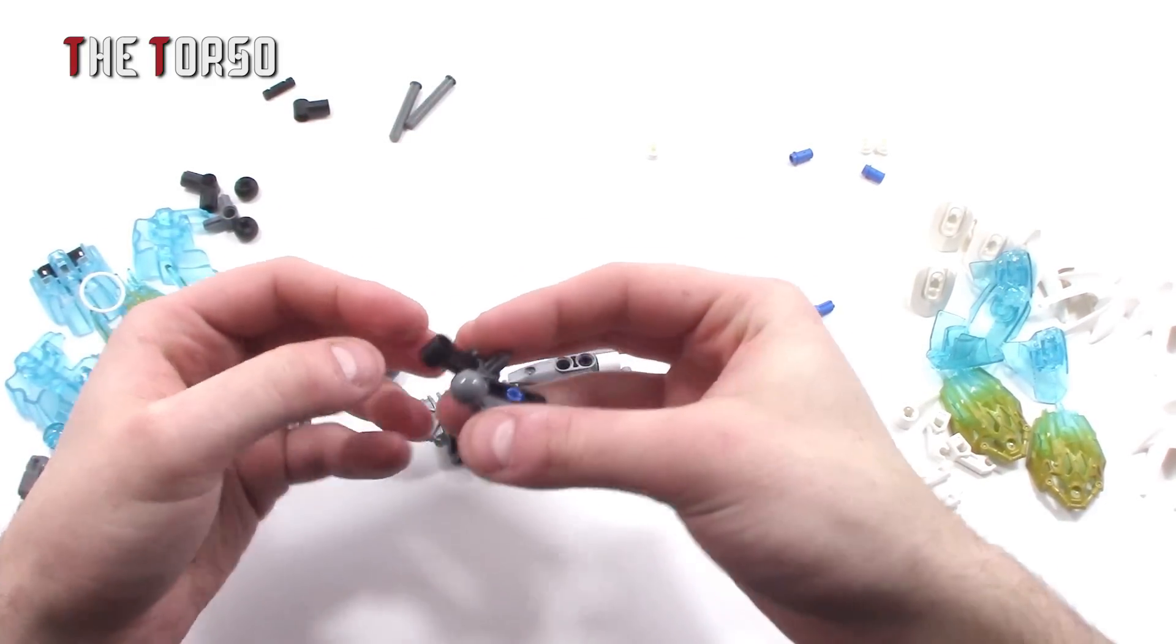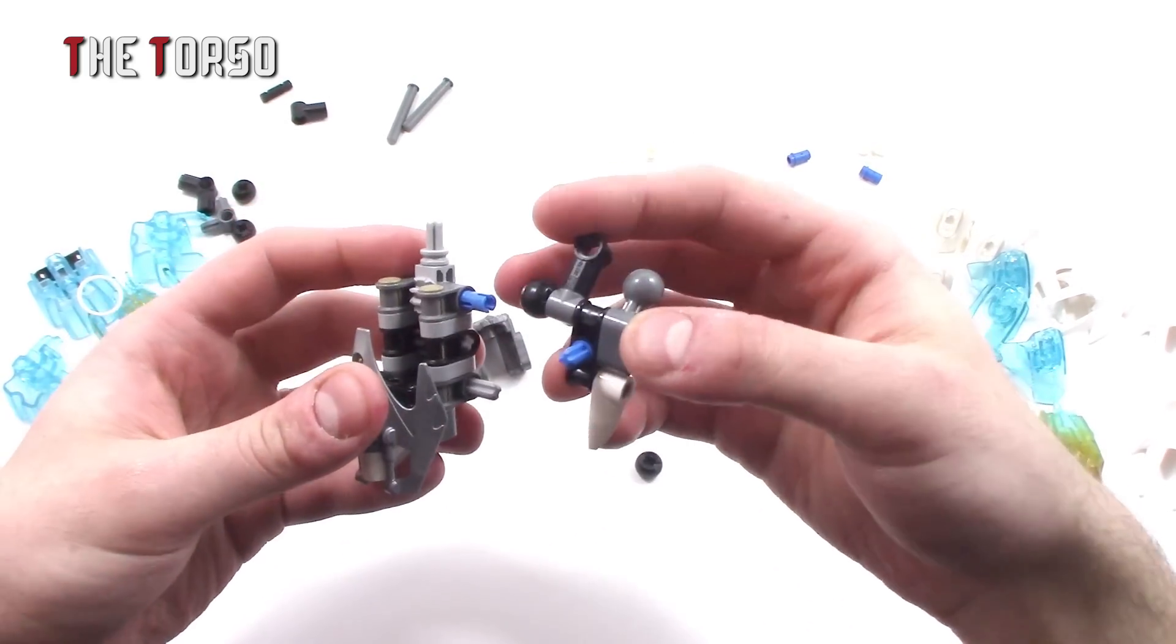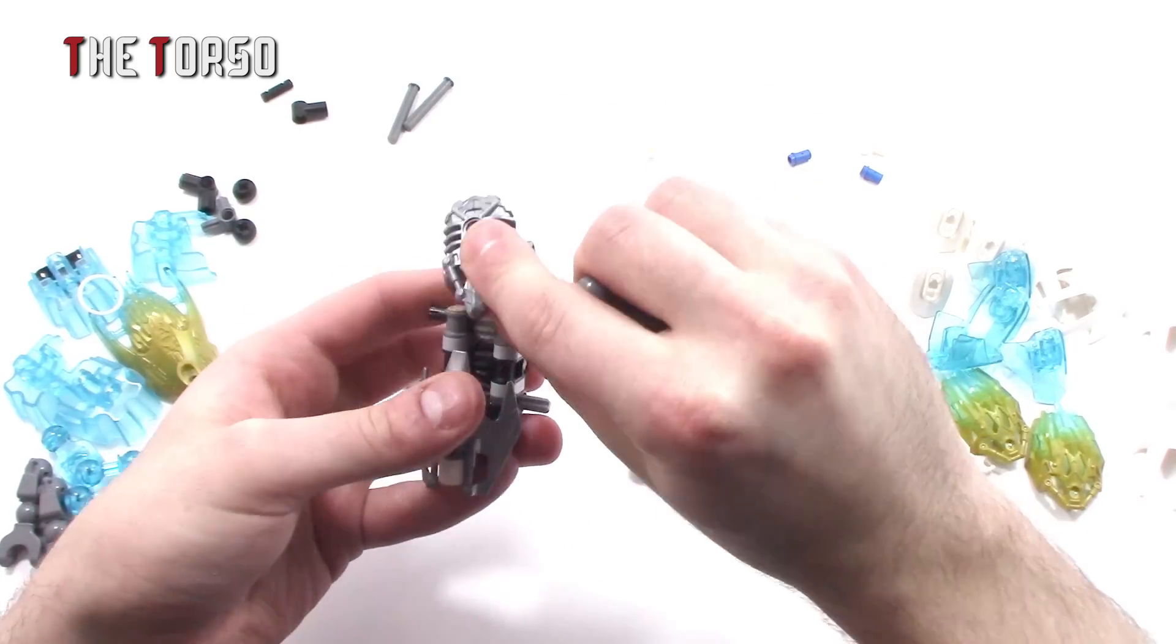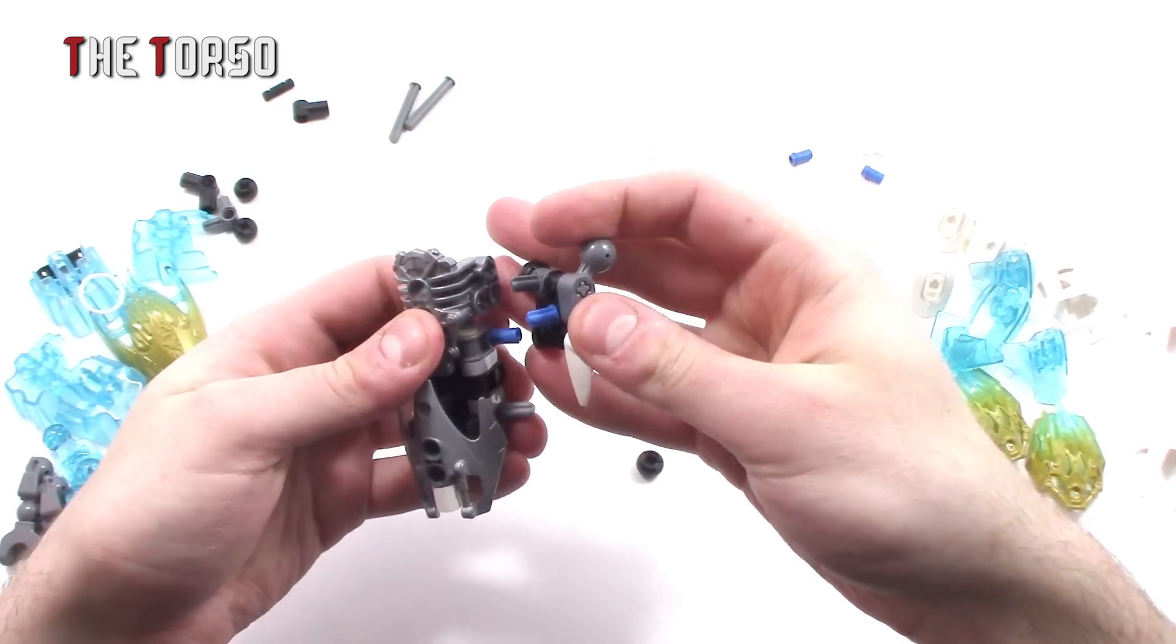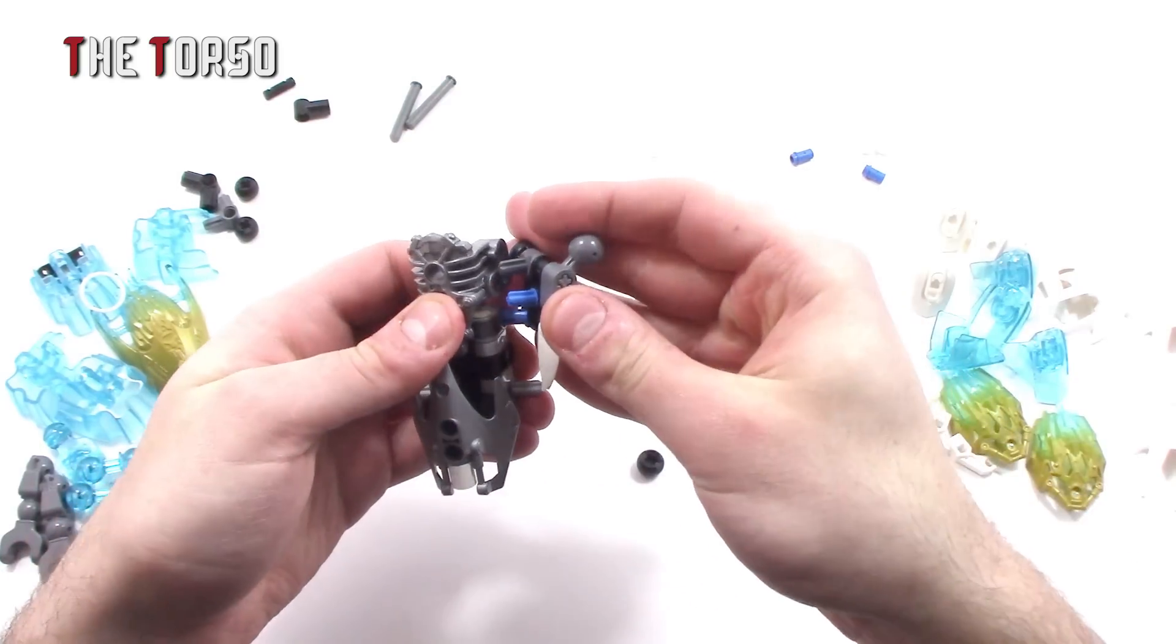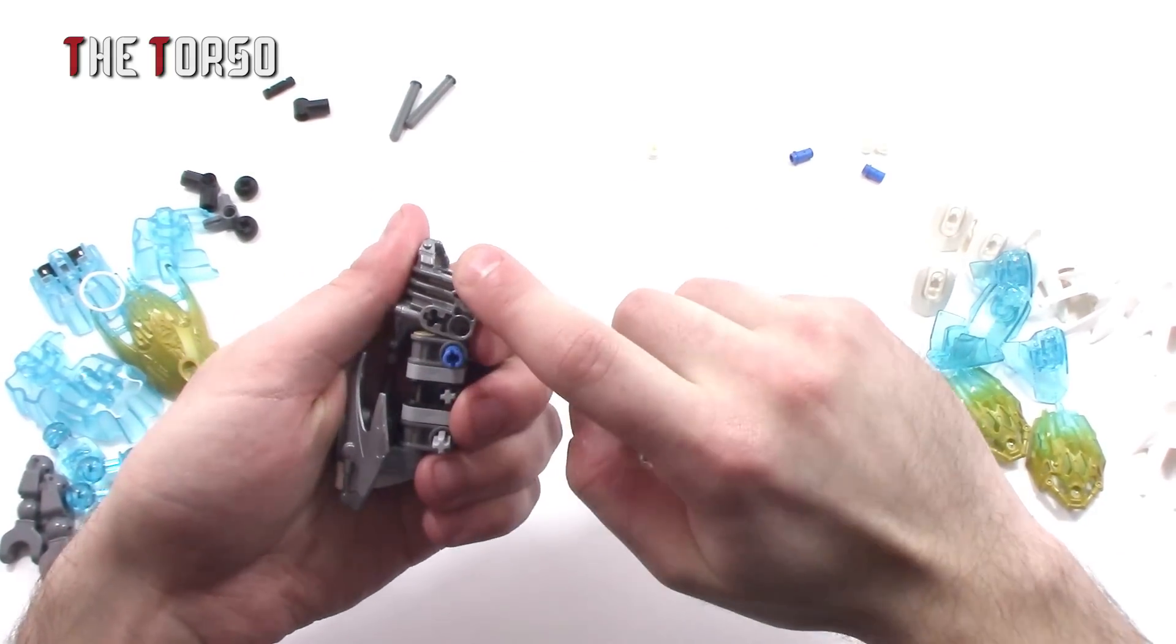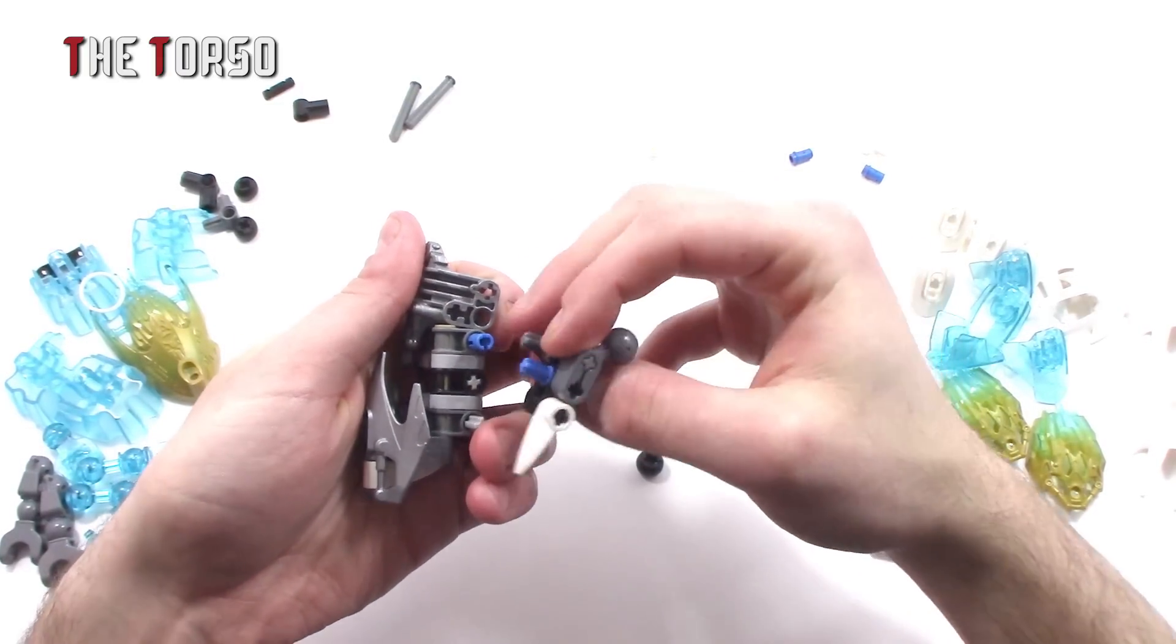So this is the first connection point. I believe this is the right connection point. So how this works is just like so. You line these up here, and then everything just kind of goes together. Those two pegs go in there.